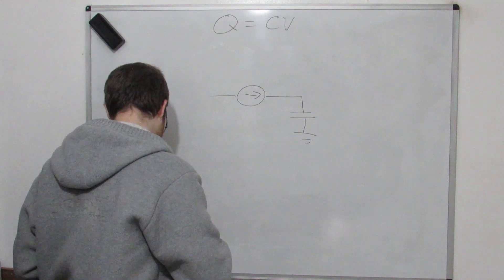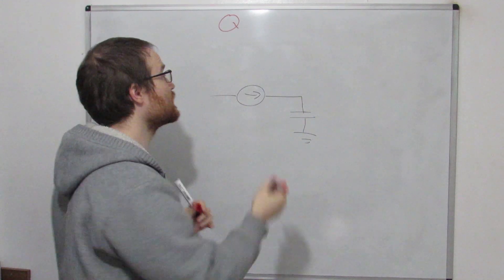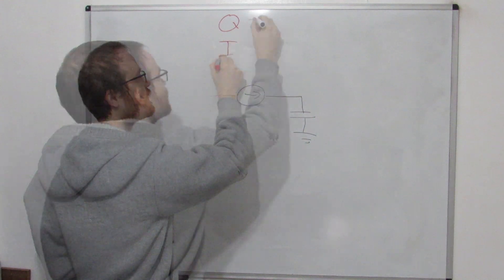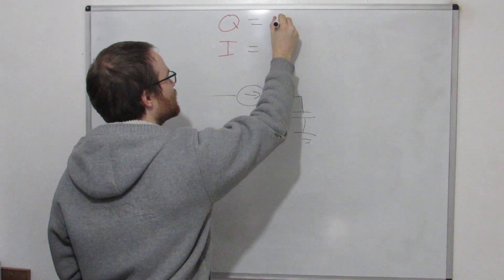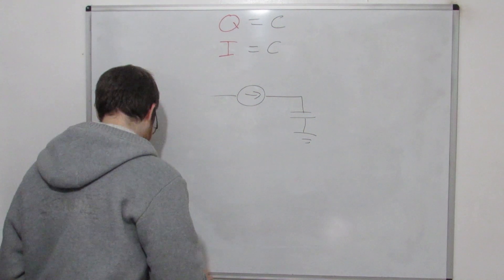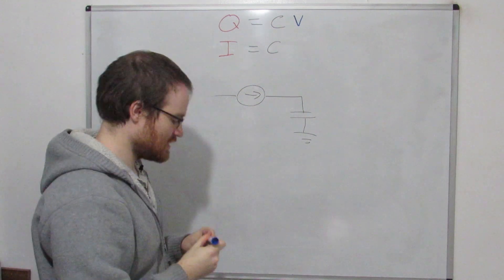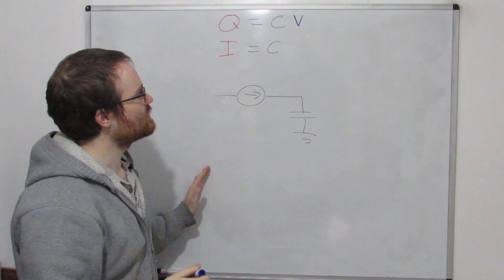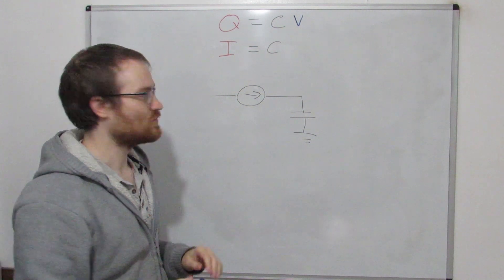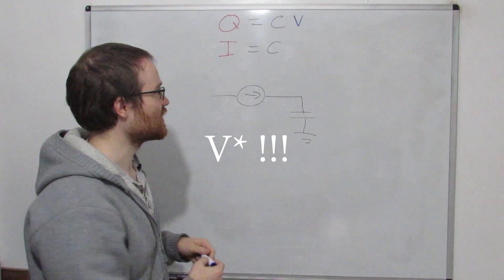We know that down here, we've got Q here, and when Q changes, we now know that we can call that I for current. And then we know that equals C, which doesn't change for a given capacitor. Next thing we've got is this V. Is there some way that we can represent how the voltage is changing with time? When I say with respect to time, that just means as time is changing, Q is also changing.